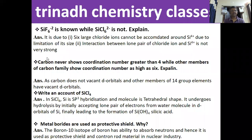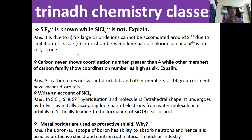The first question: SiF6²⁻ is known while SiCl6²⁻ is not. There are two reasons why SiF6²⁻ exists whereas SiCl6²⁻ doesn't. First, six large chloride ions cannot be accommodated around Si4⁺ ion due to the limitation of its size. Second, the interaction between the lone pair of chloride ion and Si4⁺ ion is not very strong.